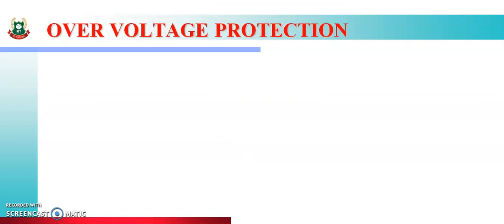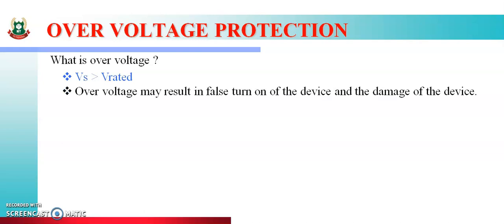Next one scheme is overvoltage protection. So, the question is what is overvoltage? Overvoltage means Vs greater than V rated. That means supply voltage is greater than the SCR's rated voltage. Overvoltage may result in false turn on of the device and damage of the device. If the supply voltage coming to the SCR is greater than its rated value, the SCR will have false turn on. That means the SCR should not turn on because that's an abnormal condition. But still the SCR, sensing the high voltage, turns on. And when this false turn on happens, the device will get damaged.